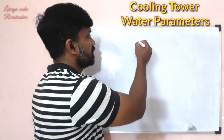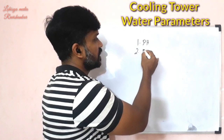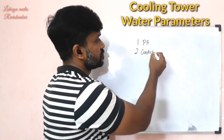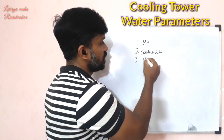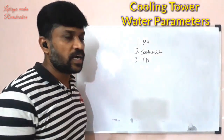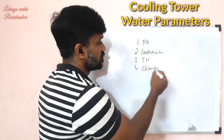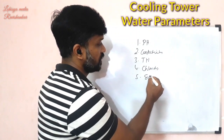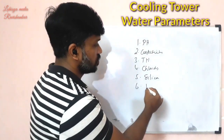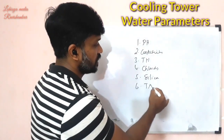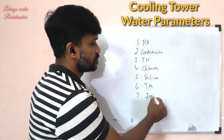The water parameters we will check are: first, pH; second, conductivity; third, total hardness; fourth, chlorides; fifth, silica; sixth, total alkalinity; and seventh, iron.